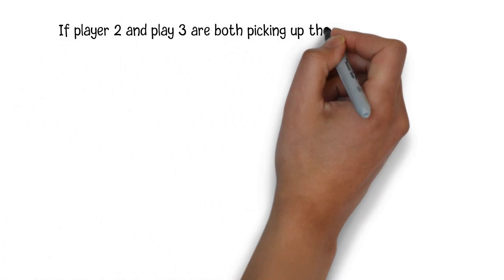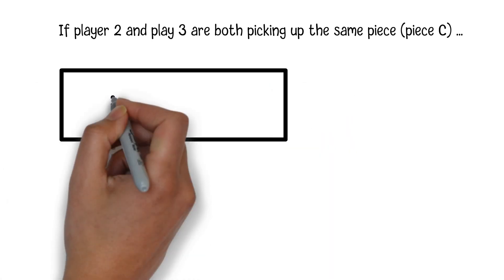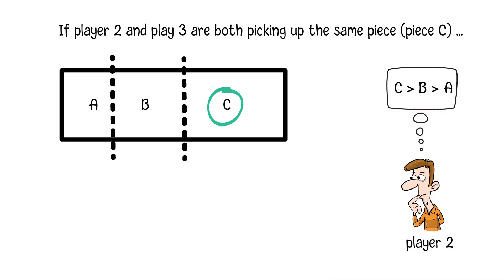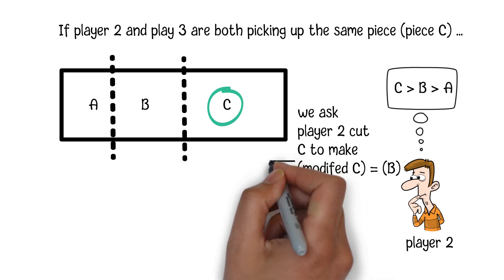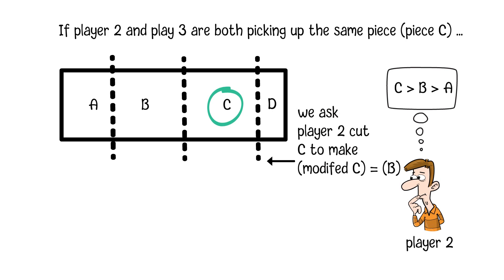If player 2 and player 3 are both picking up the same piece, say piece C. The third step, if player 2 thinks the ranking of those three pieces are C, B and A, then we will ask player 2 to cut a small piece off from piece C to make the leftover the same size as piece B. Let's name this extra piece as D.